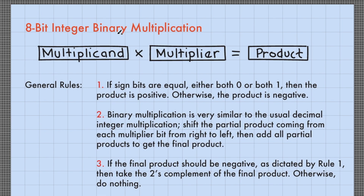When you perform multiplication, the number before the cross symbol is called the multiplicand, and the number after the times symbol is called the multiplier. The result of this multiplication process is called the product.